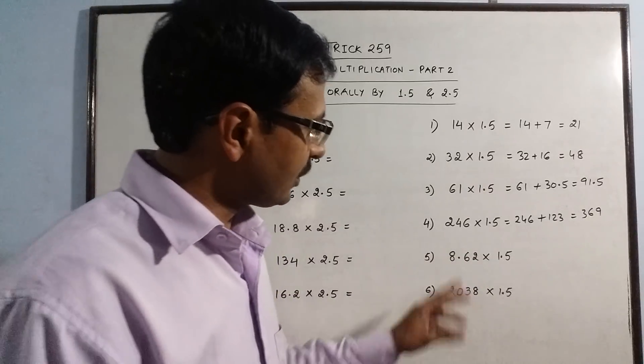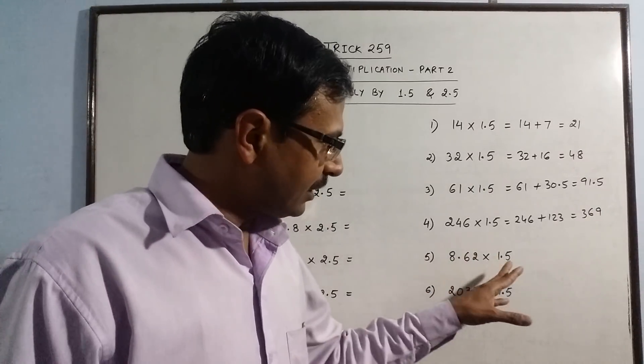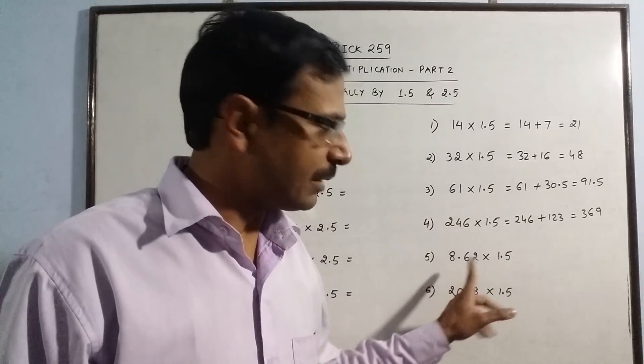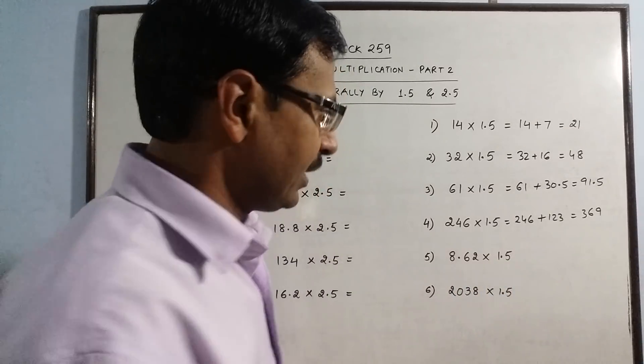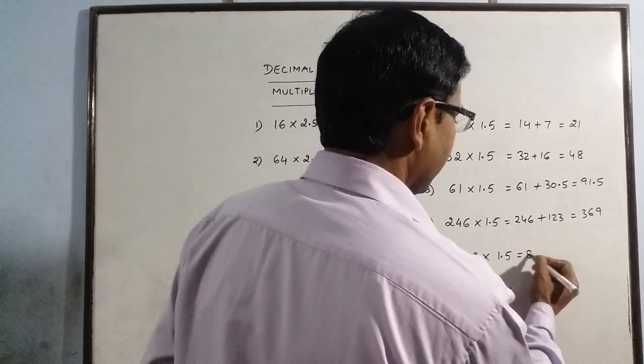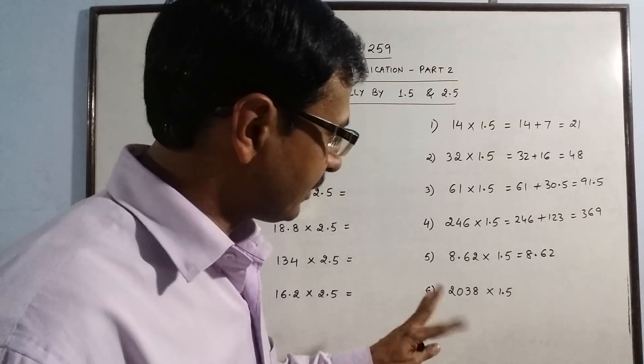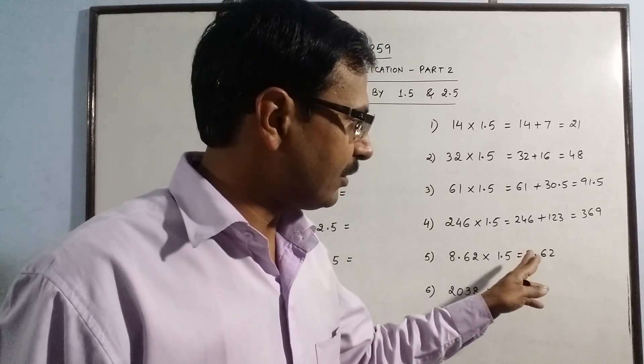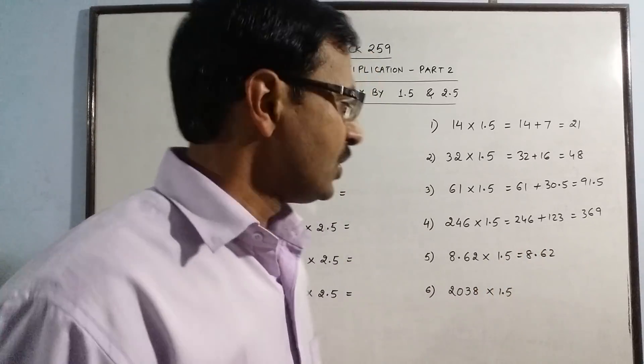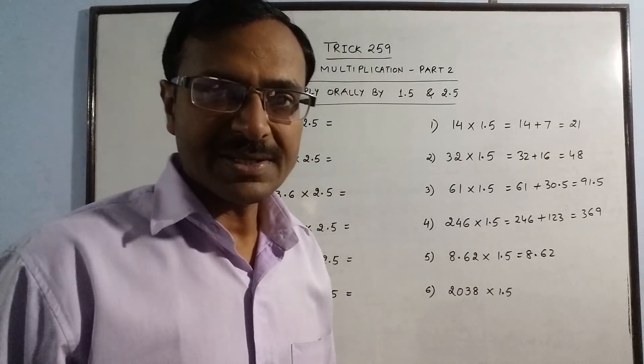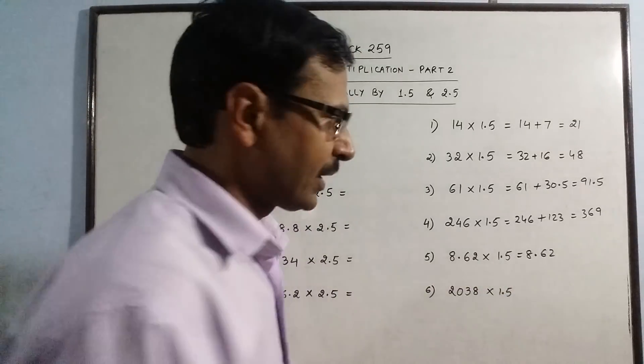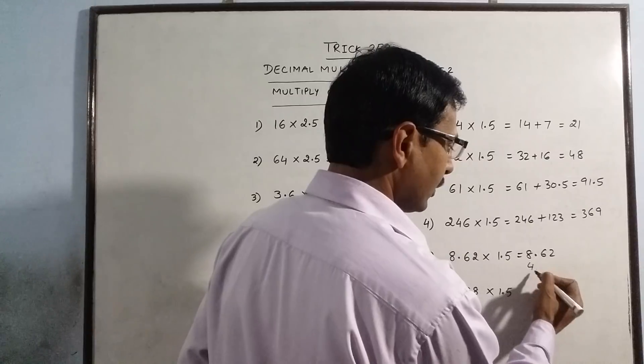Now see some more problems. This number is also in decimal and we have to multiply that decimal number by 1.5. When you have to multiply 8.62, I will write it one below the other because decimal numbers are normally added by writing decimal below the other decimal. So 8.62 remains as it is. Now I have to half that: 8 half is 4, 3, and 1.